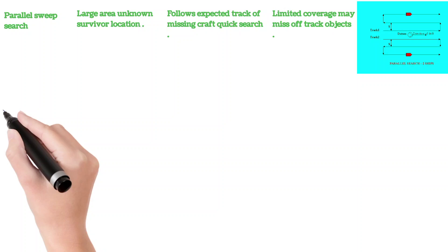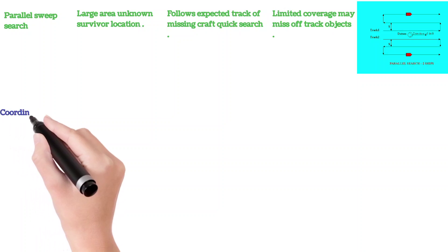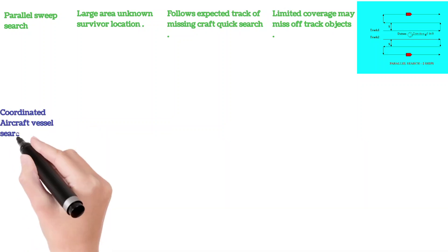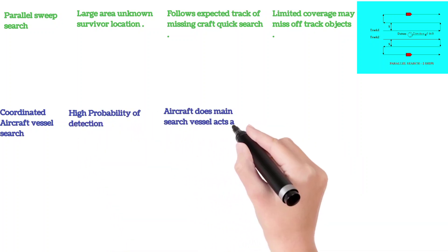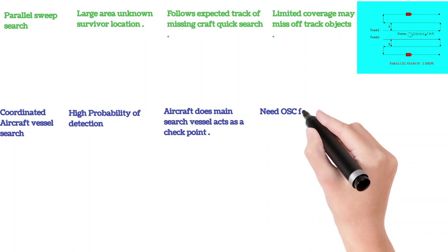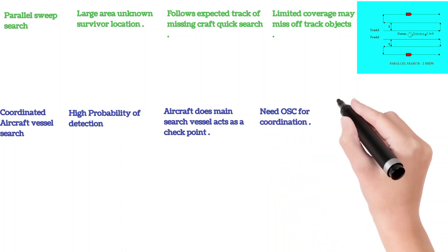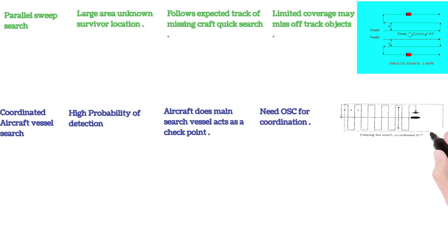Then we have coordinated aircraft vessel search. High probability of detection. Aircraft does the main search. Vessel acts as a checkpoint, so aircraft is main and vessel acts as a checkpoint.